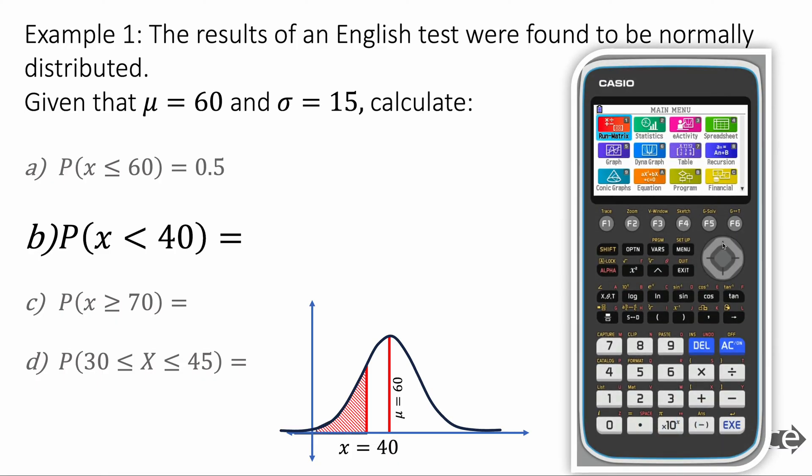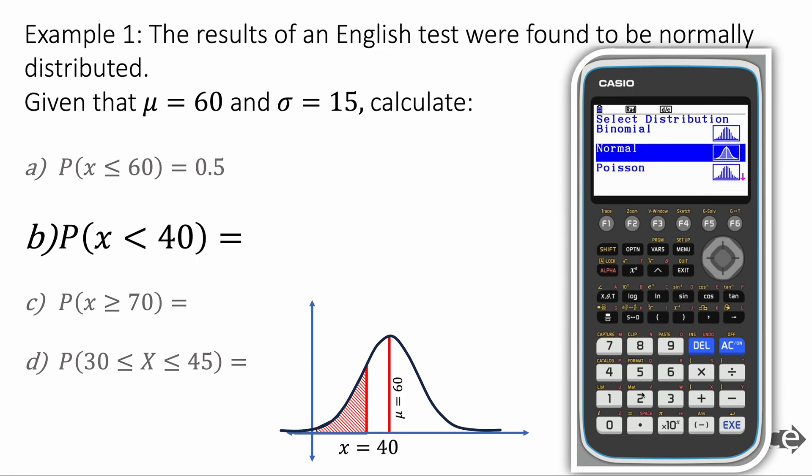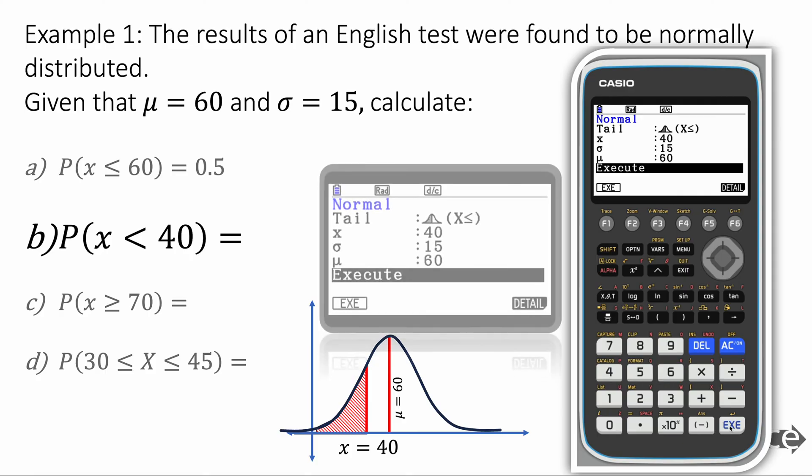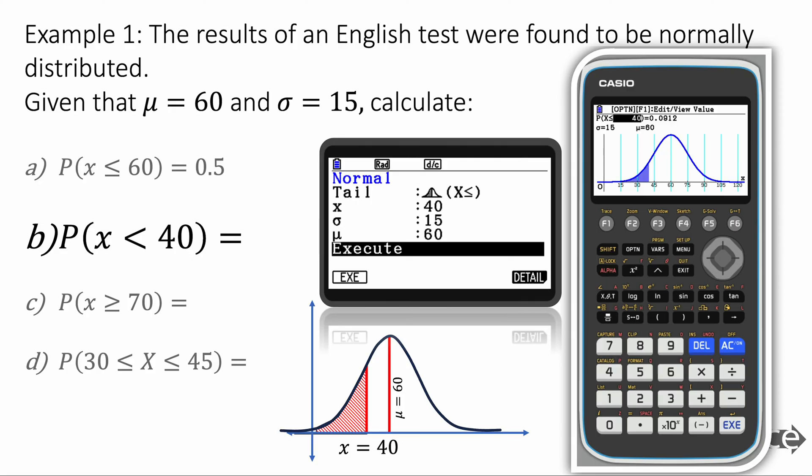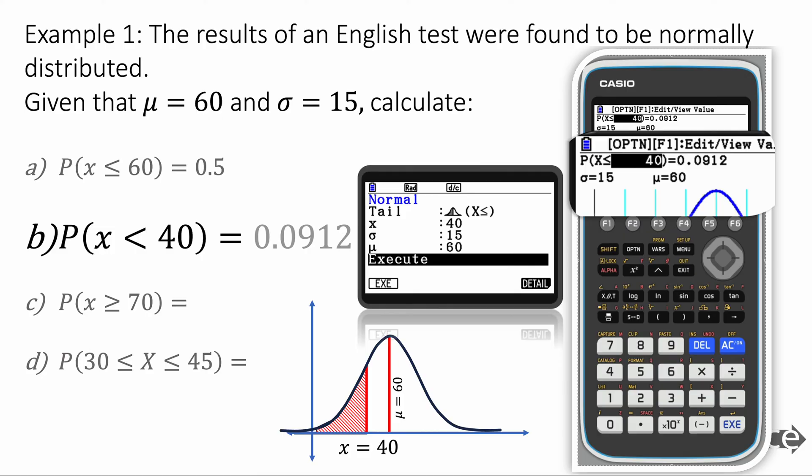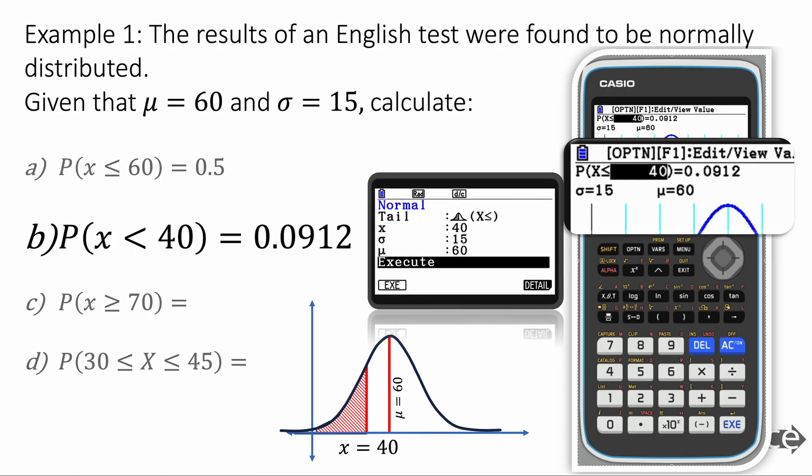Part B says probability that x is less than 40 and we're going to go to our distribution on our GDC from the main menu and we're going to choose normal like this. We're going to make the tail to be on the left because the data is less than, it's left. The x value is going to be 40. The standard deviation we're going to set to 15 and the mean is going to be 60 like this. We press execute and we get this. It draws a nice graph and it shows the probability that x is less than 40 is 0.0912. That is the final answer. So we write 0.0912 and in IB we normally write to three significant figures.